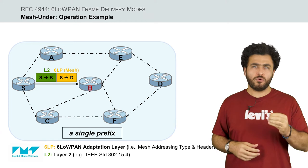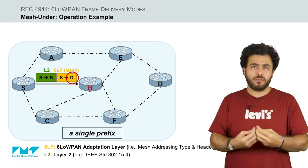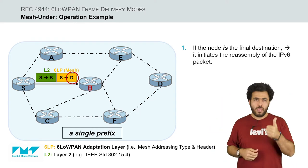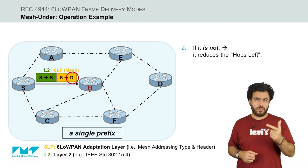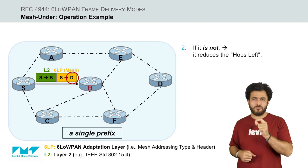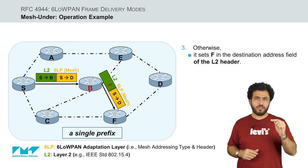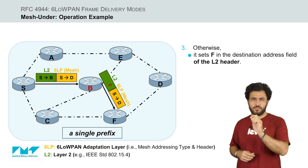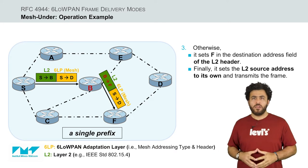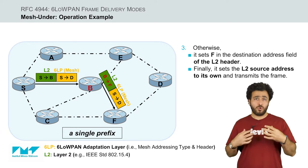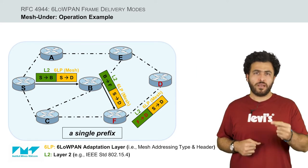Similarly, when a forwarding node receives a frame — in this case node B — it checks the mesh addressing header's final address field to determine the final destination according to the following three options. If the node is itself the final destination, it initiates the reassembly of the IPv6 packet. If it is not the final destination, the node reduces the hops-left field, and if the result is 0, discards the frame. Otherwise, the node consults its link layer routing table, determines the next hop to the final destination, and sets that layer 2 address in the destination address field of the layer 2 header. Finally, the node changes the layer 2 header's source address to its own link layer address and transmits the frame. These operations are performed at each intermediate node before an IPv6 packet reaches its destination.